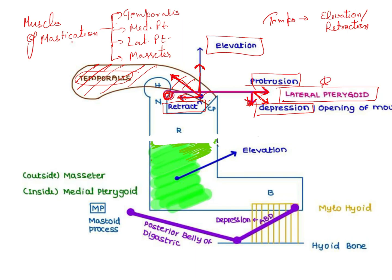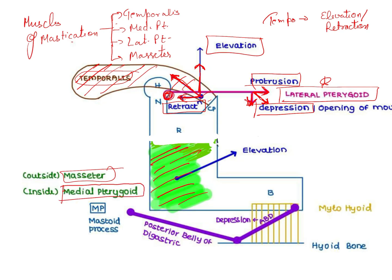This whole blue-greenish area on the outer side is your masseter, and on the inside, toward the same ramus area, you have the medial pterygoid. The actual vector component for these muscles is directed upward, which causes elevation of the mandible. So these are the various functions of all these muscles.